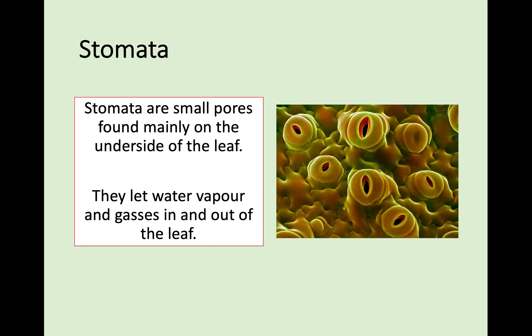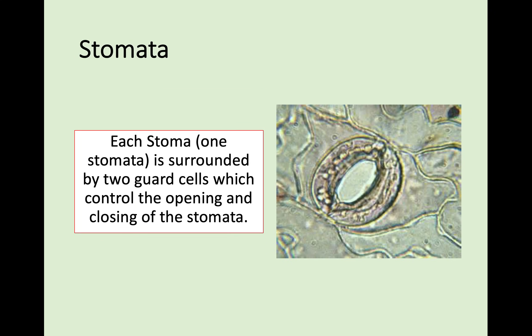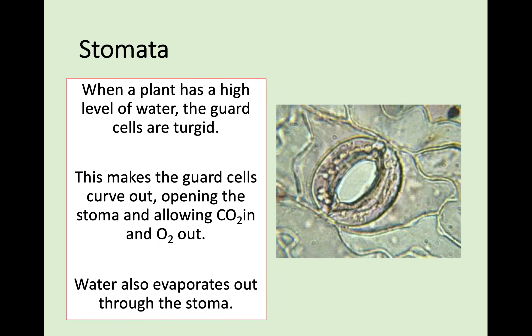Stomata - you can see a microscope picture here - are small pores mainly found on the underside of the leaf. They let water vapour and gases in and out of the leaf. Each stomata is surrounded by two guard cells - those two C-shaped bits on the side. Guard cells control the opening and closing of the stomata. When a plant has a high level of water, the guard cells are turgid and full of fluid, they curve out, and that creates an opening in the stomata. That allows carbon dioxide into the leaf and oxygen produced as a by-product of photosynthesis out of the leaf.